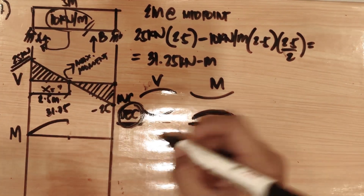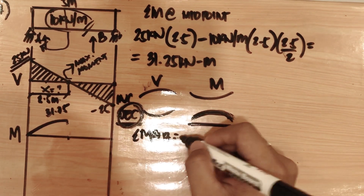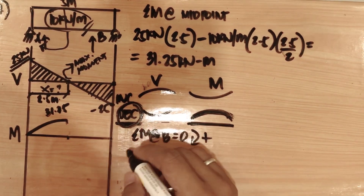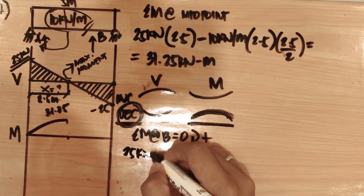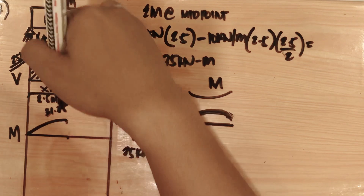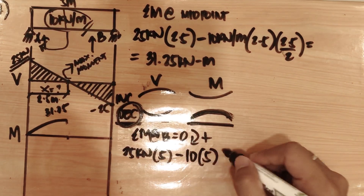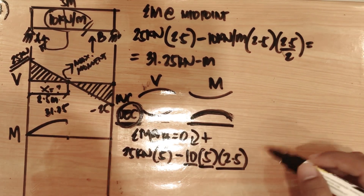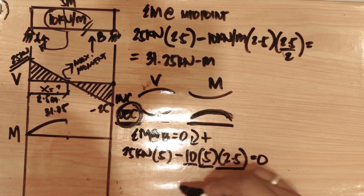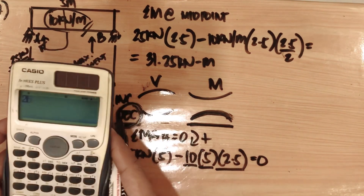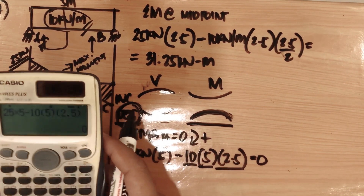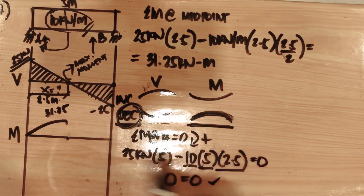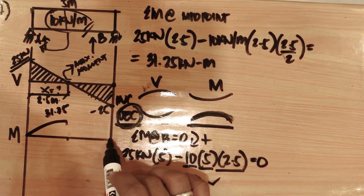For the moment at point B, summation of moment: RA times 5 minus 10 times 5 times 2.5 equals zero. So 25 times 5 minus 10 times 5 times 2.5 equals zero. The moment at point B is zero. Since the shear is decreasing from midpoint to B, the moment diagram also curves downward back to zero.